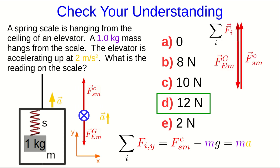But again, it might be nicer to see that graphically. Here's the graphical addition of the force vectors, and when we know that that gravitational force has a size of 10 newtons, and ma is 2 newtons, then that shows us that the force by the spring must be 12 newtons.